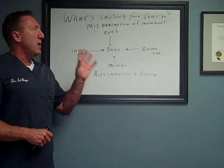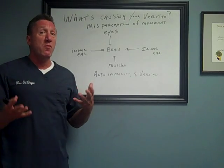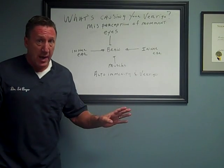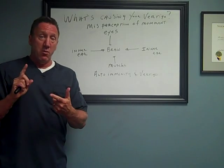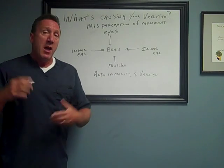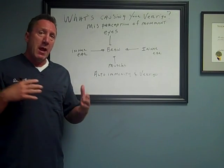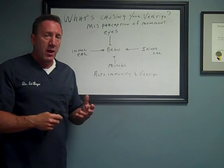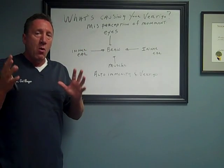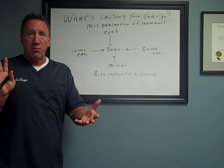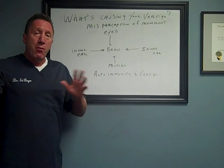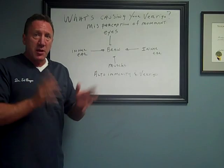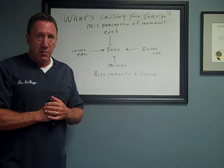What vertigo is — it's a misperception of movement. You think your environment's moving when it's really not, or you think you're moving when you're not really moving. It's really important that the way for us to function in our world, our brain needs to know if we're moving or if our environment's moving. Our brain has a system that does that solely, and that system's called our vestibular system.